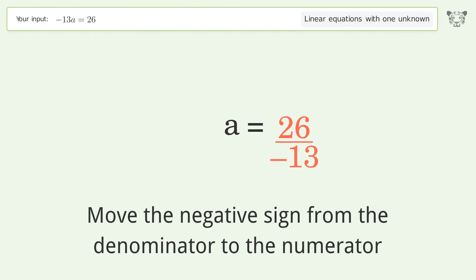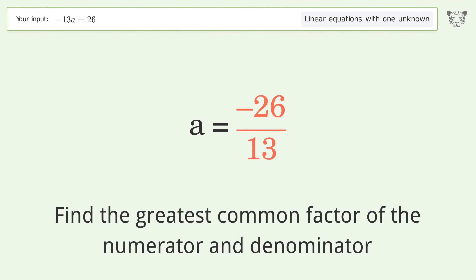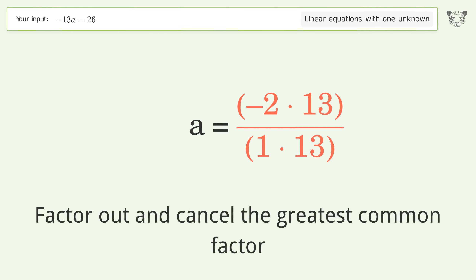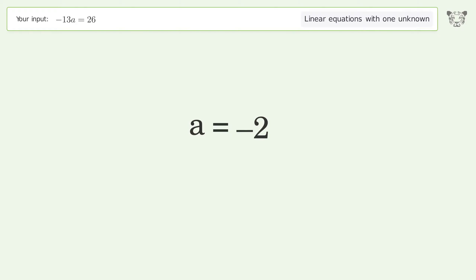Move the negative sign from the denominator to the numerator. Find the greatest common factor of the numerator and denominator, then factor out and cancel the greatest common factor. And so the final result is a equals negative 2.